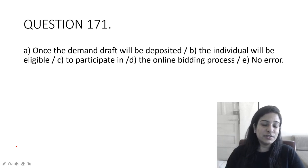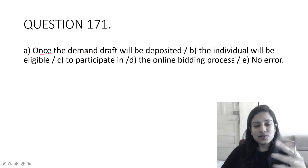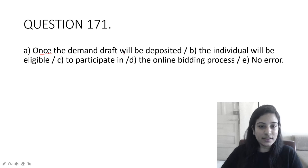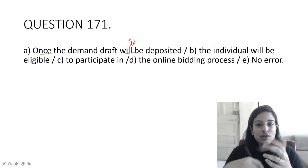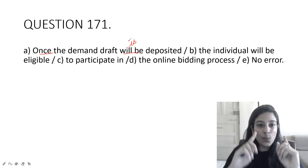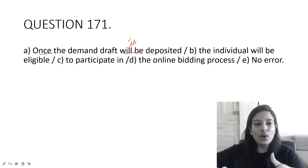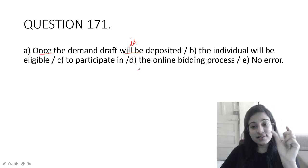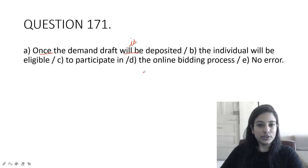Let's start without any further ado. Question 171: Once the demand draft will be deposited, the individual will be eligible to participate in the online bidding process. You are seeing guys here this sentence is in future tense, and once, as soon as, when these words come in that part we don't give future tense, we give simple present tense. So the part should be 'once the demand draft is deposited.' This is simple future tense rule.